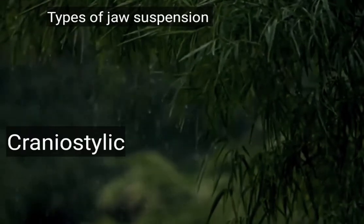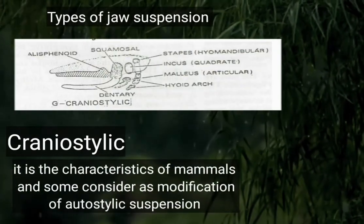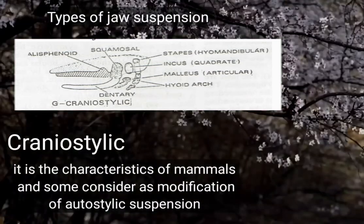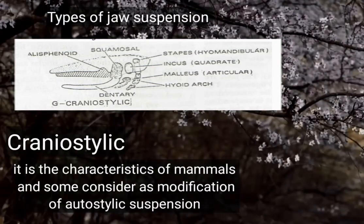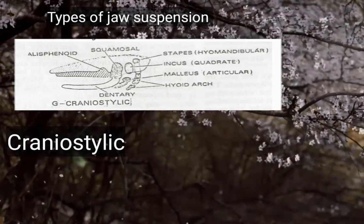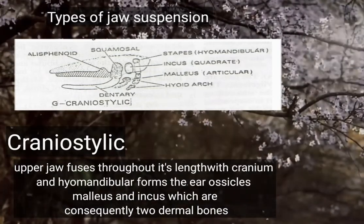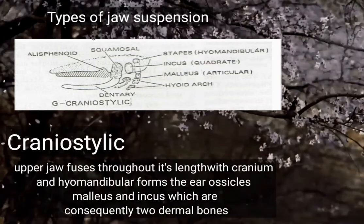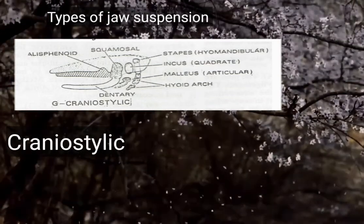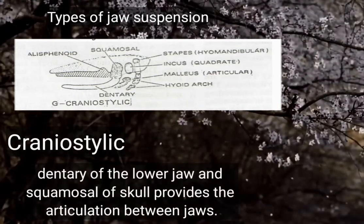The fifth type is craniostylic jaw suspension, which is a characteristic feature of mammals. Some consider it a modification of autostylic jaw suspension. In craniostylic jaw suspension, the upper jaw fuses throughout its length with the cranium. The hyomandibular forms the ear ossicles — the malleus and incus — which are consequently two dermal bones. The squamosal bone of the skull provides the articulation between the jaws.